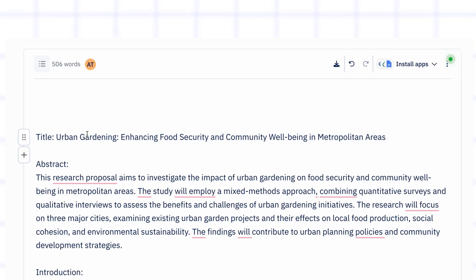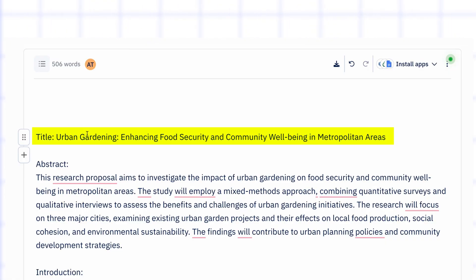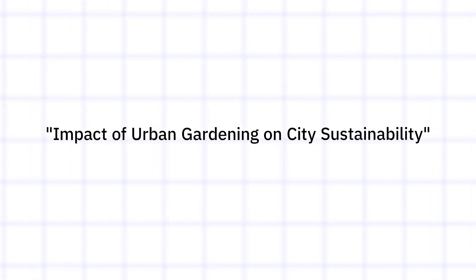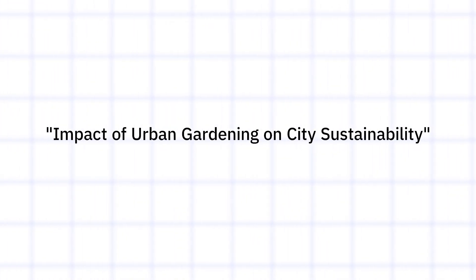Now that your outline is ready, let's start filling it in section by section. First up is your title. This is the very first thing readers see, so it should clearly reflect what your research is about. Keep it short, specific and to the point. For example: 'Impact of Urban Gardening on City Sustainability.' Notice how this exactly tells you what the study is about without being too vague or too broad.